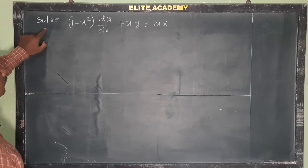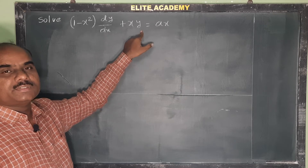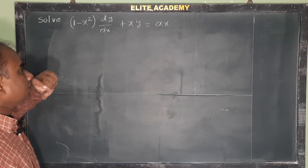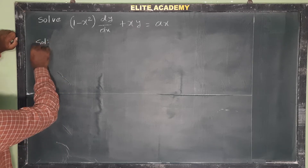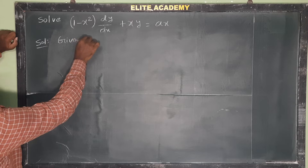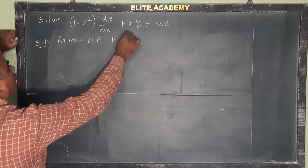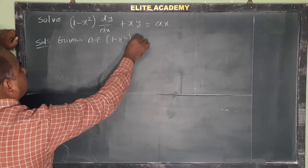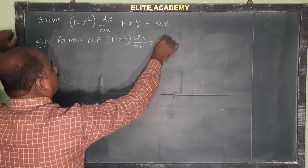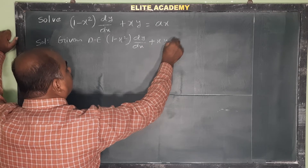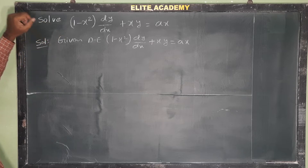Okay, next problem. Solve (1 - x²) dy/dx + x·y = ax, where a is a constant. The given differential equation is (1 - x²) dy/dx + x·y = ax. This is our given differential equation.